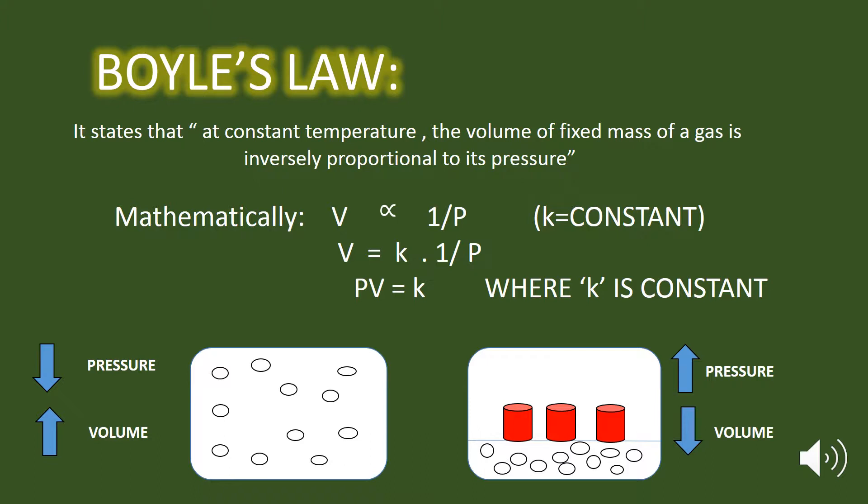The mathematical proof is here. As you can see, the volume is inversely proportional to pressure, where the temperature is denoted by a constant K. So we can write this equation as PV is equal to K, where P is the pressure of a gas, V is the volume of a gas, and K is the constant temperature.